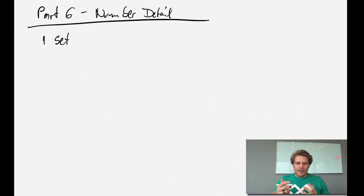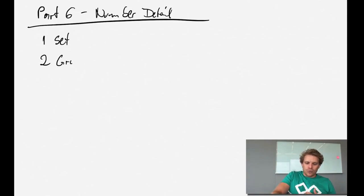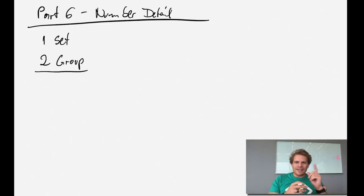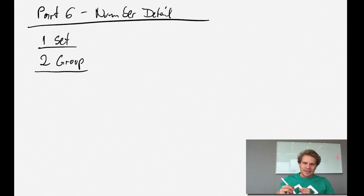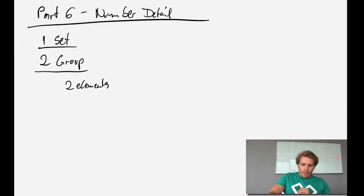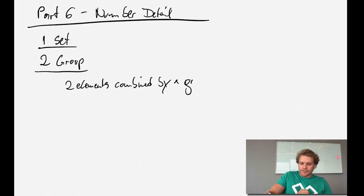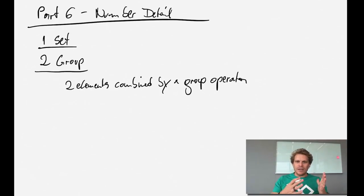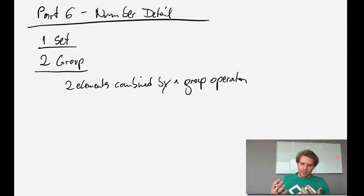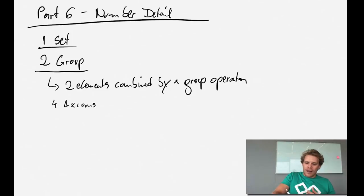Now we get into a more interesting part - a group. A group is defined as where two elements get combined by a group operator, and the outcome has to be part of the group as well. That's actually one of four axioms that define a group.